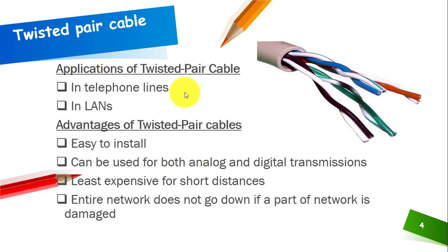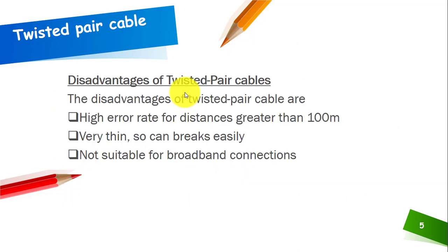The advantages of twisted pair cable are: it is easy to install; it can be used for both analog and digital transmissions, which is a major advantage; it is the least expensive option for short distances; and if one part of the network is damaged, the entire network does not go down.